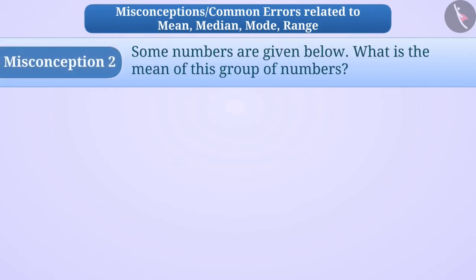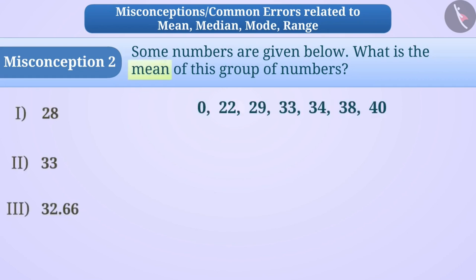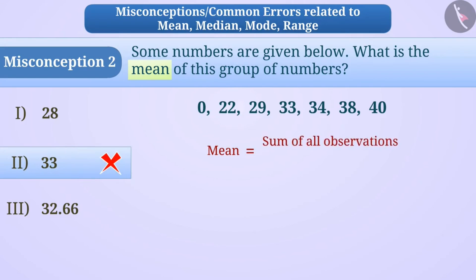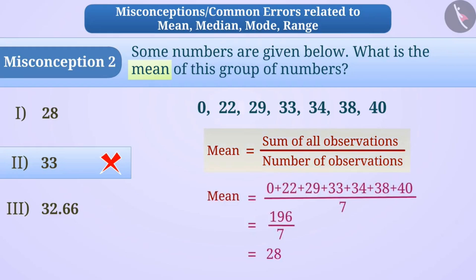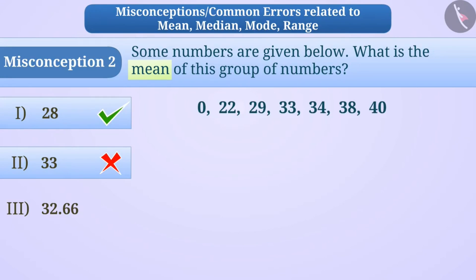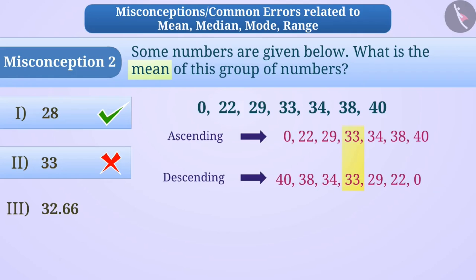Misconception 2: Some numbers are given. What is the mean of this group? Because of confusion between mean and median, some children think mean is the middle number in the series, that is 33 — but this is incorrect. Mean equals sum of all observations divided by number of observations, so the mean here is 28, making option 1 the correct answer. Keep in mind that when numbers are arranged in ascending or descending order, the number in the middle is called the median. Here, the median is 33.